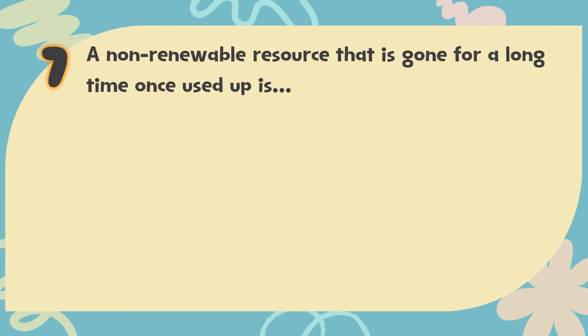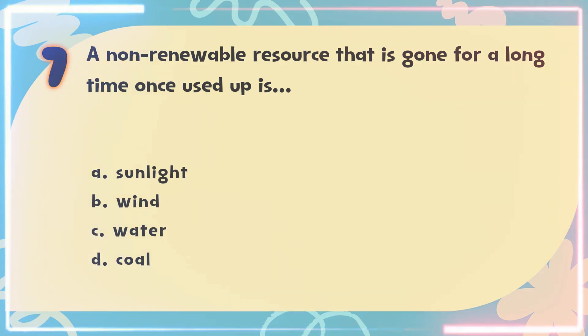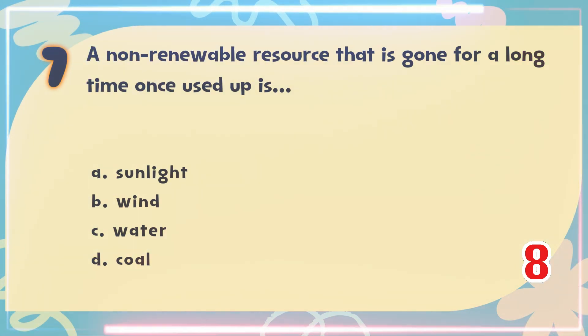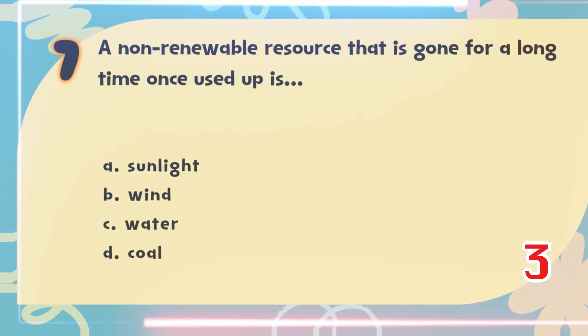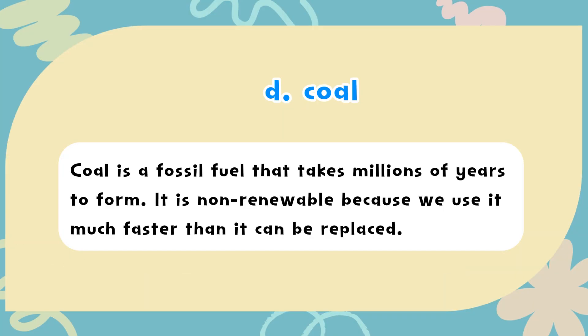Number 7: A non-renewable resource that is gone for a long time once used up is — A. Sunlight, B. Wind, C. Water, D. Coal. The correct answer is D. Coal. Coal is a fossil fuel that takes millions of years to form. It is non-renewable because we use it much faster than it can be replaced.